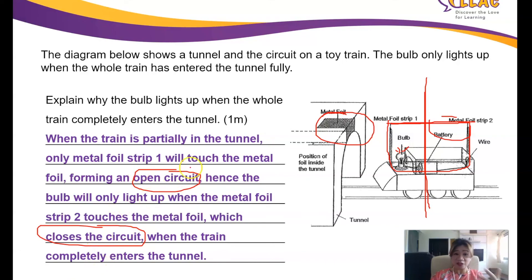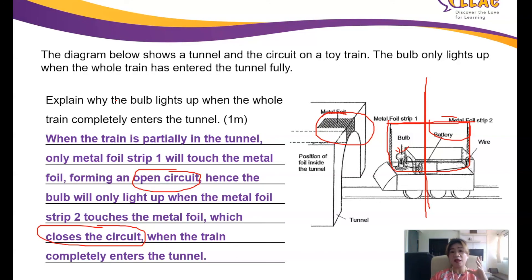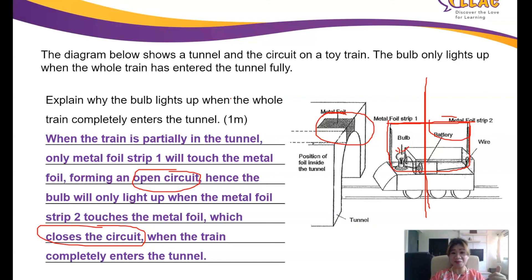This is how you answer electricity questions. You need the keywords: open circuit and closed circuit. For electromagnets, remember — more coils means stronger. Know parallel and series circuits and how to draw and connect them. That's all for electricity. I hope you learned a lot today. Do repeat the video for a better understanding, and subscribe to our YouTube channel for new videos. Thank you, see you, bye-bye.